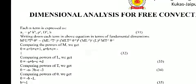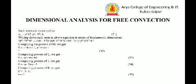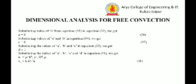Pi 1 is expressed in terms of its fundamental dimensions. By comparing the powers of M, L, T, and theta and resolving and rearranging, we get b = −1 from equation 35. Substituting b into equation 32 gives a = 0 (equation 36). Substituting a and b into equation 34 gives c = 0 (equation 37). Similarly, d = 1. Therefore, the first pi term pi 1 = h·D / k, which is the Nusselt number.